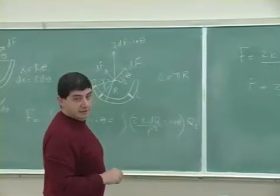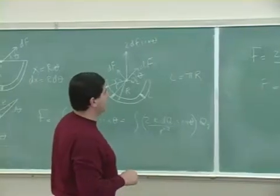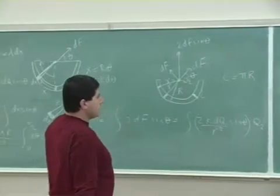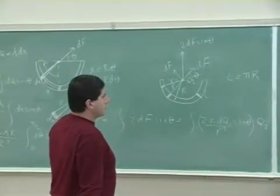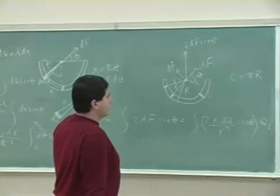So the final answer is 2k q₁q₂ over pi r squared.